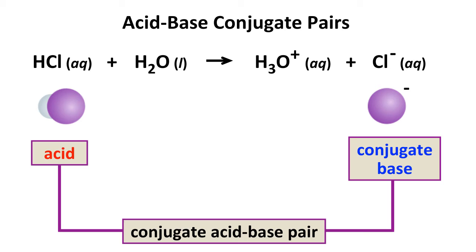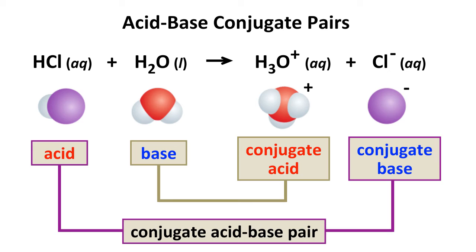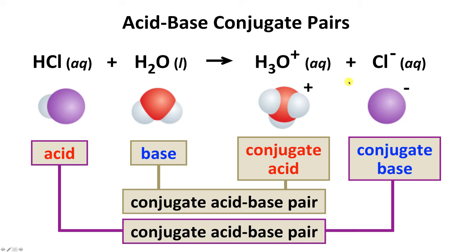There's another conjugate acid-base pair in this reaction. H2O accepts the H+ from HCl to produce H3O+. This pair of substances — H2O and H3O+ — differ by only an H+, a proton. H2O accepts a proton from HCl, so it's a Bronsted-Lowry base, and H3O+ is its conjugate acid. If we go in reverse, H3O+ could donate a proton to Cl-. So H2O and H3O+ are the other conjugate acid-base pair.